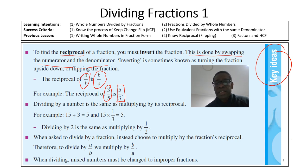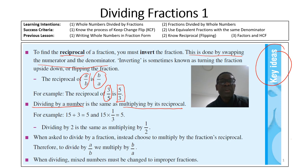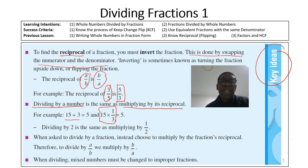We'll talk more about this during the lesson. Now, dividing by a number is the same as multiplying by the reciprocal. For example, 15 divided by 3 is the same as 15 multiplied by 1 over 3, which gives you a result of 5. Dividing by 2 is the same as multiplying by a half. When asked to divide by a fraction, instead choose to multiply by the fraction's reciprocal.